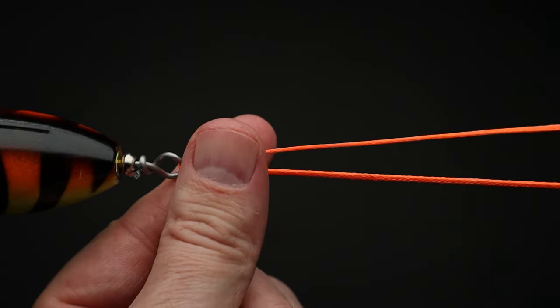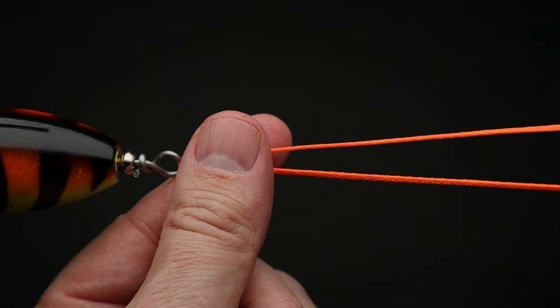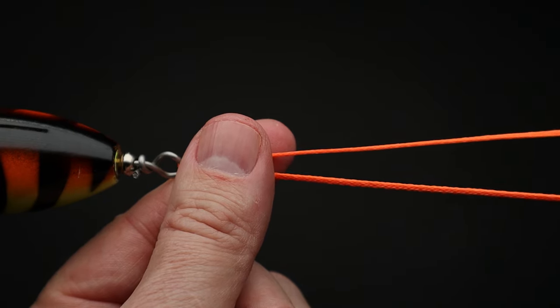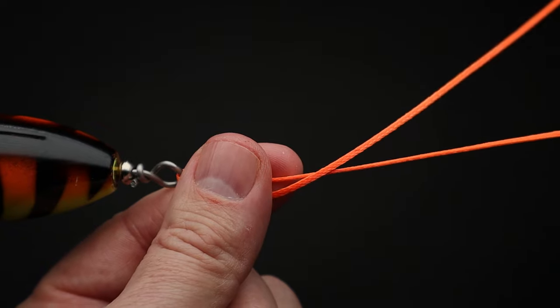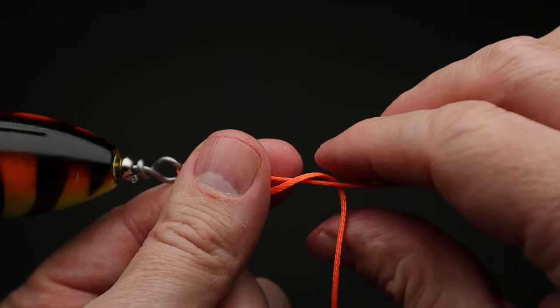Next, pinch the two lines together at the eye of the lure. Then take the end of the line and wrap it around the main line 6 to 8 times.